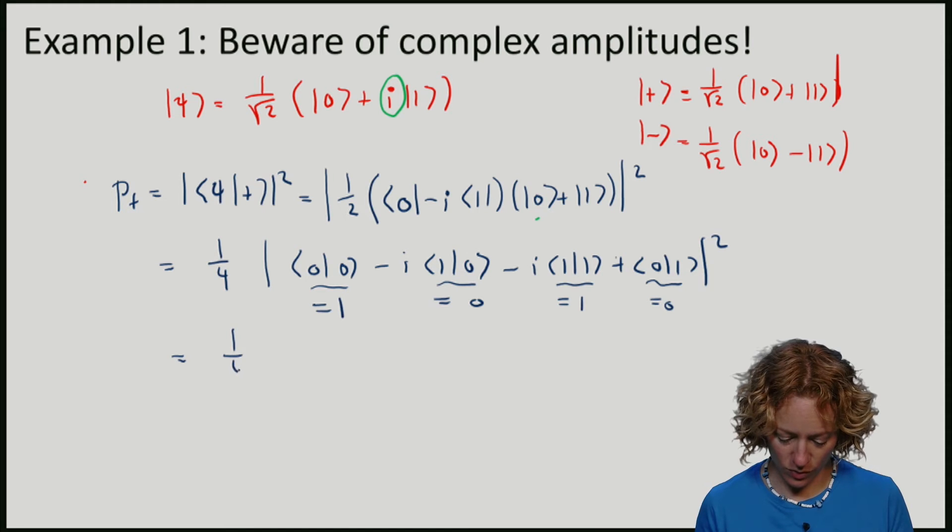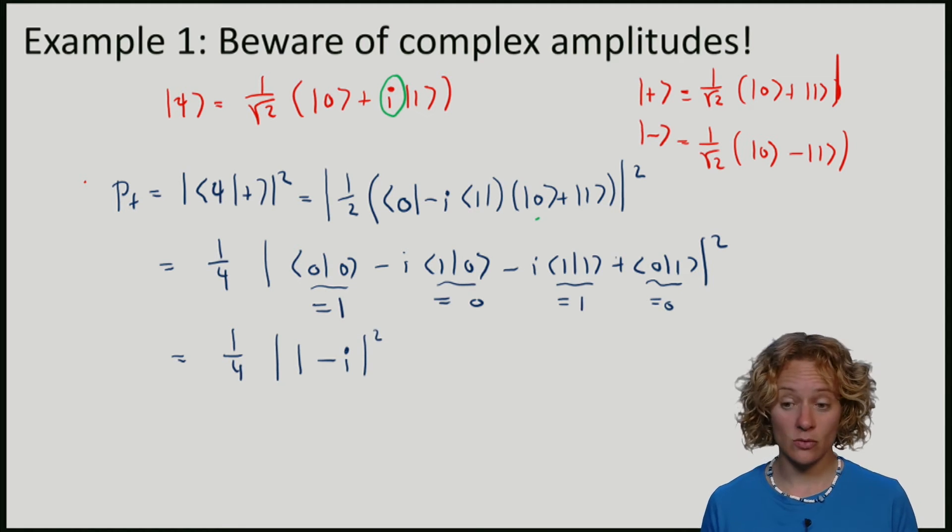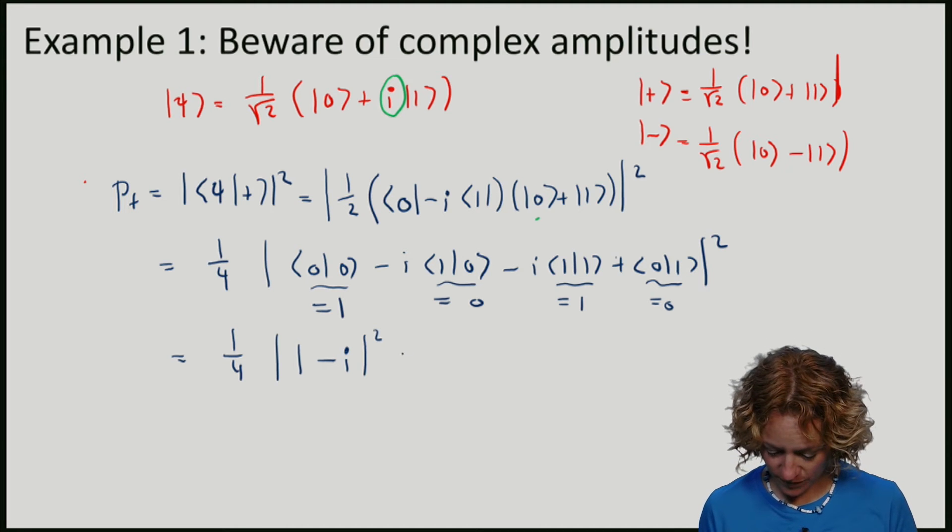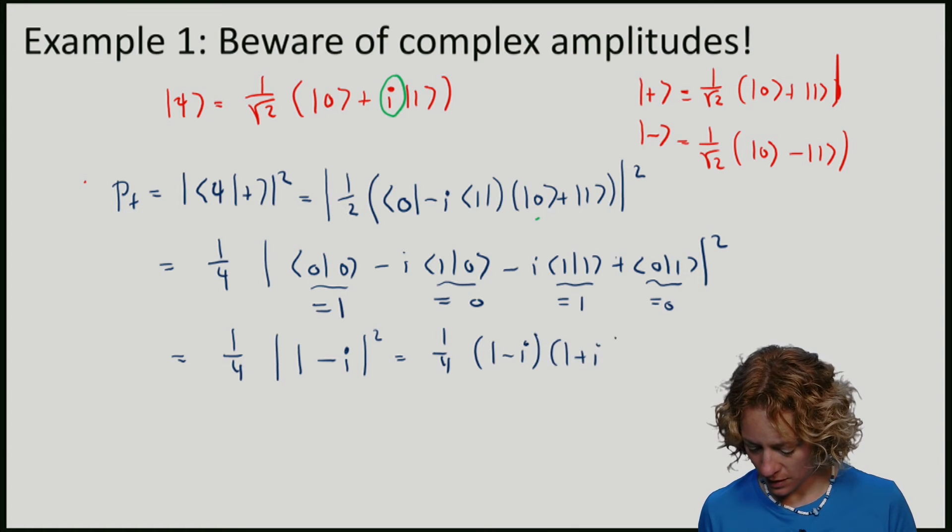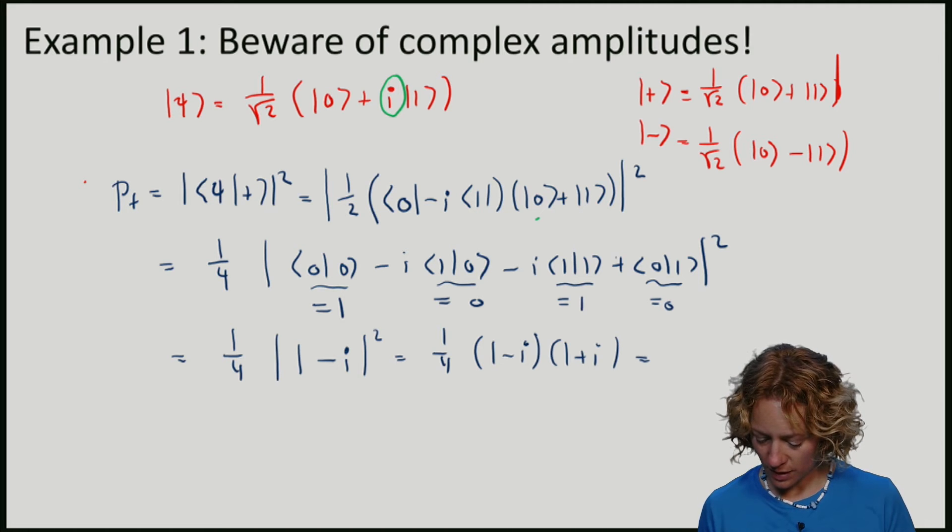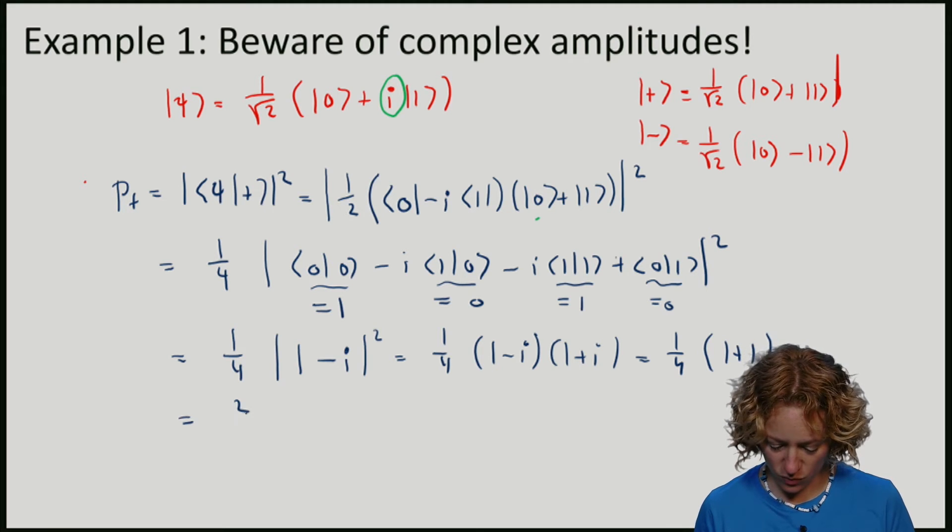So what do we get? We have one quarter times one minus I one. So remembering the definition of this, namely half times one minus I one plus I, we see that we have a quarter times one plus one, which is two over four, which is a half.